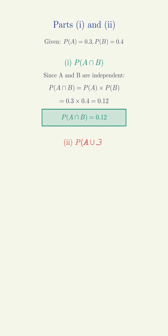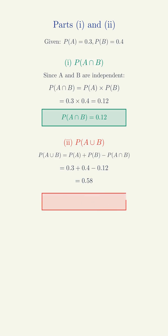Part 2: P of A union B. P of A union B equals P of A plus P of B minus P of A intersection B equals 0.3 plus 0.4 minus 0.12 equals 0.58.